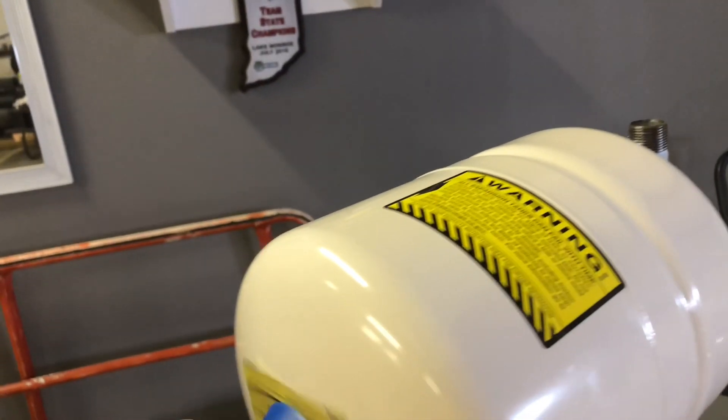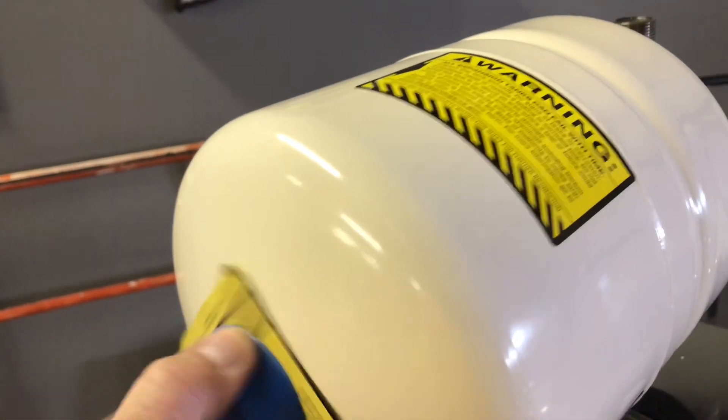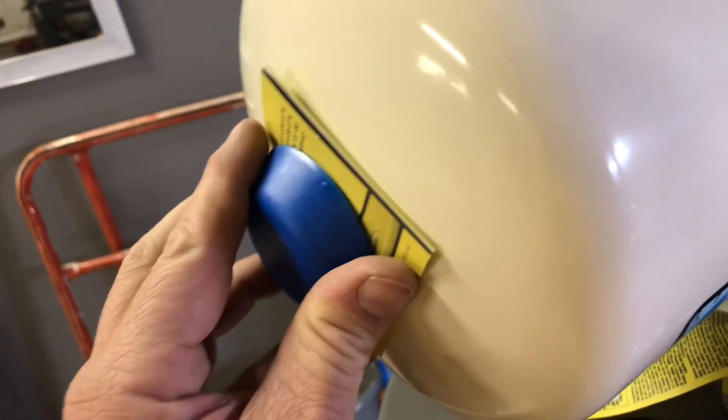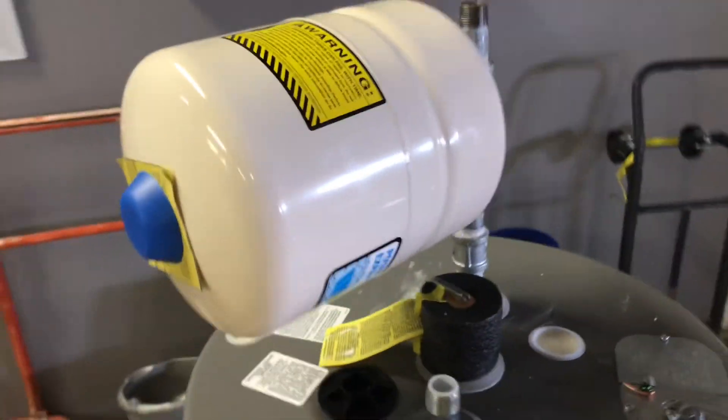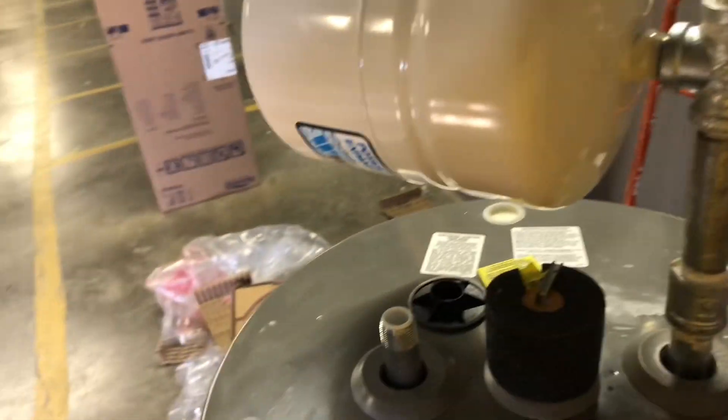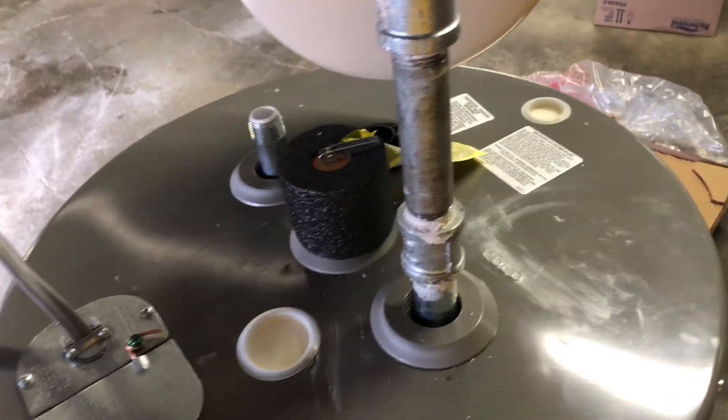And then, if you look under here, there should be a little Schrader valve in case you have to adjust the air pressure for any reason based on how much pressure you have coming into your building. But that is the reason we have an expansion tank. It prolongs the life of the water heater. It prevents excessive buildup of pressure inside the water heater.